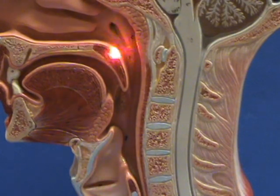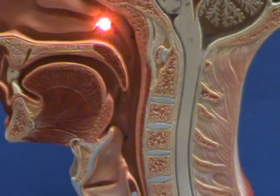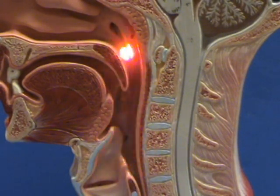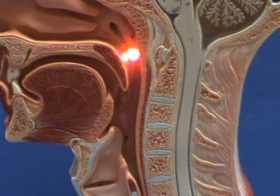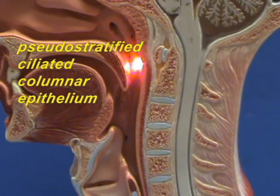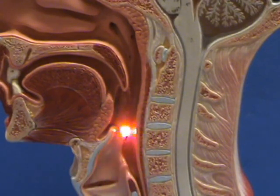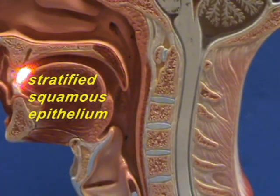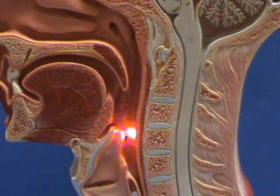Although the nasopharynx, oropharynx, and laryngopharynx are all sections of the pharynx, there is a difference in the lining of the mucous membrane of each. The epithelium of the nasopharynx is your typical upper respiratory epithelium — pseudostratified ciliated columnar epithelium, or PCCE. The epithelium of the oropharynx and laryngopharynx is stratified squamous epithelium, which is typical of the oral cavity and more resistant to abrasion by particulate matter.